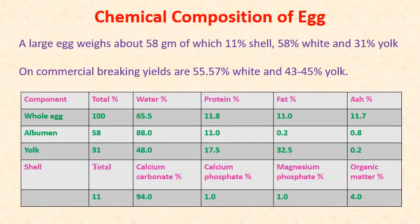Chemical composition of egg: a large egg weighs about 58 grams, of which 11% is shell, 58% is white, and 31% is the yolk. In commercial breaking, the egg white will be around 55–58% and the yolk about 43–45%. The water content in whole egg is 65%, in albumin 88%, and in yolk 48%. Protein content in whole egg is 11.8%, in albumin 11%, and in yolk 17.5%. Fat content in whole egg is 11%, very less in albumin, and 32.5% in yolk. Ash content in whole egg is 11.7%, and very less in both albumin and yolk. The shell composition is mainly calcium carbonate at 84%, then calcium phosphate 1%, and magnesium phosphate 1%.